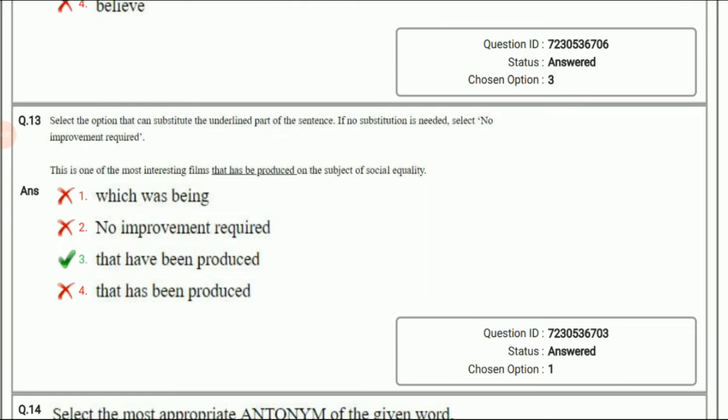Next question: Select the option that can substitute the underlined part of the sentence. If no substitution is needed, select no improvement required. This is one of the most interesting films that has been produced on the subject of social equality. This is not correct according to grammar rules. The answer will be 'this is one of the most interesting films that have been produced on the subject of social equality'. Has cannot be the correct word here because these are films, so we have to choose the plural word. The option will be 'that have been produced'.